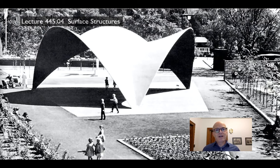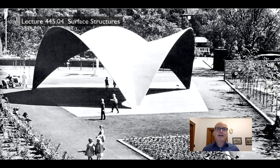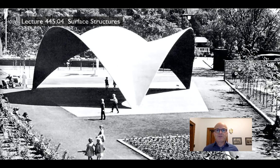The one principle that really defines shells is double curvature, and even though that's a great thing structurally, it's often a very difficult thing to build. Surface structures are predominantly a 20th century phenomenon for a couple of reasons. One is that they rely on materials that are good in both compression and tension, and therefore they require the steel that we didn't really have to work with until the 19th century, to deal with the complicated shapes that we'll look at. The benefits are that these structures tend to be very thin, very agile geometrically. We can make almost any shape we want, and as you can see, they're super dramatic — they have this uncanny thinness and lightness that's very attractive both to engineers and to architects.